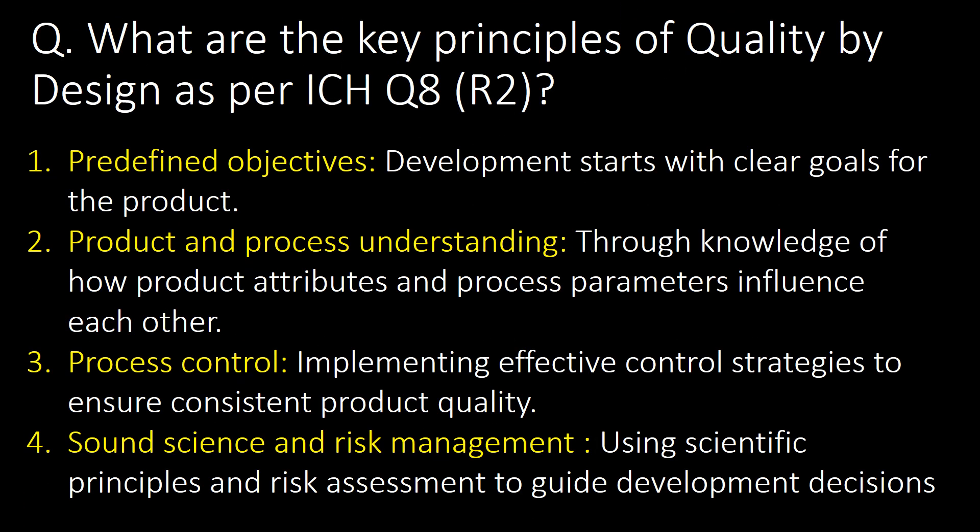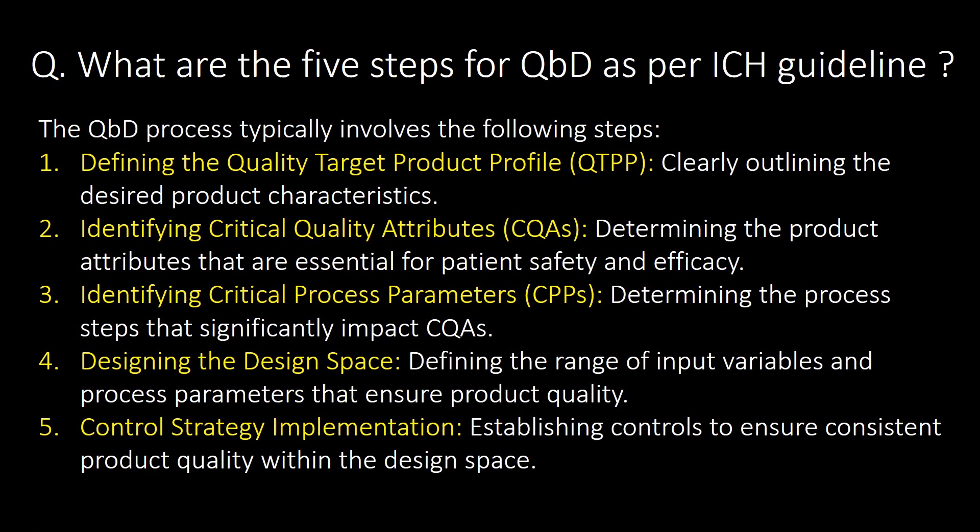What are the key principles of quality by design as per ICH Q8 R2? The four key principles are: first, predefined objectives; second, product and process understanding; third, process control; and fourth, sound science and risk management.